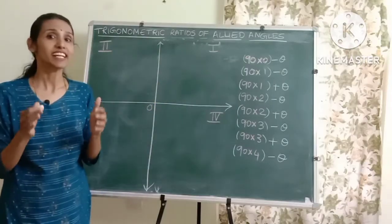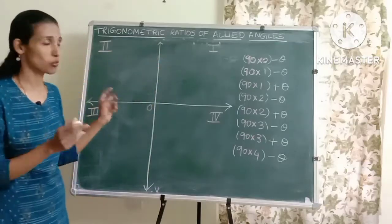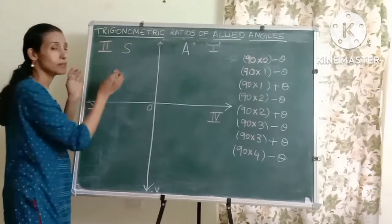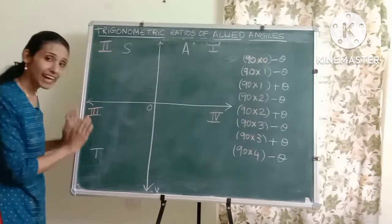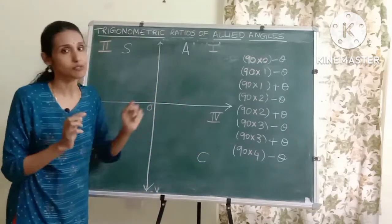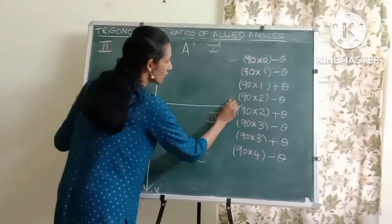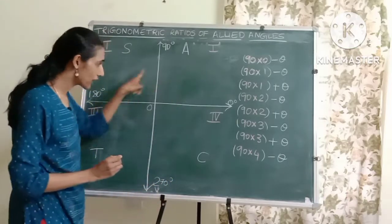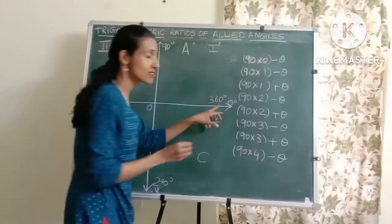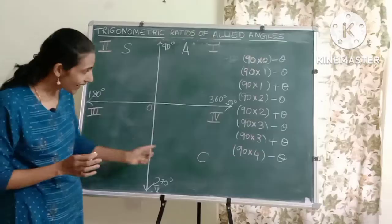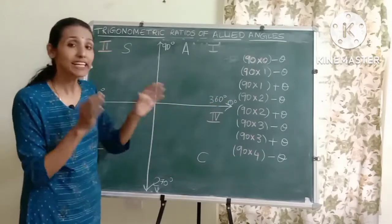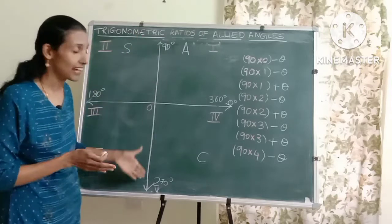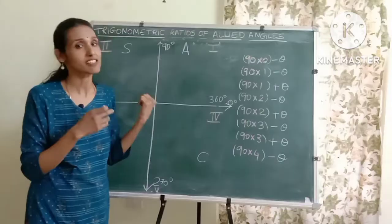Here are the four quadrants. We have already seen in a previous video which ratios are positive in all these quadrants. In the first quadrant, all the trigonometric ratios are positive. In the second quadrant, it will be sine and cosec which are positive. In the third quadrant, tan and cot will be positive, and cos and sec will be positive in the fourth quadrant. The angles are: 0 degrees, 90, 180, 270, and once we complete the full circle, we come back to 360 degrees. Notice that 0, 180, and 360 are all lying on the x-axis — they are even multiples of 90 — whereas 90 and 270 are odd multiples of 90 and lie on the y-axis. We'll keep that in mind because it will be useful later.